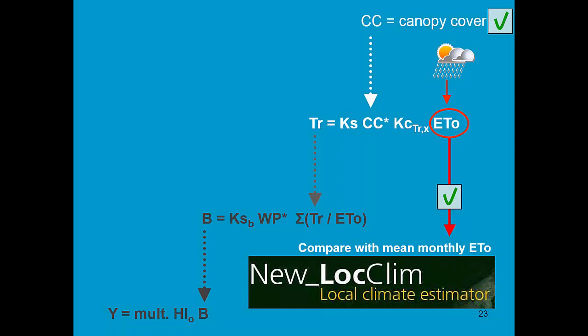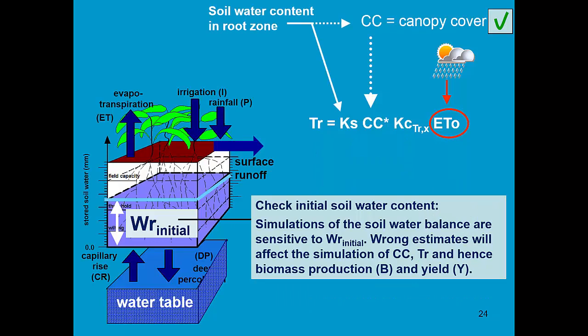So after checking ET₀, we do not need to check the proportional factor, neither the shape of the Ks curve, since these are conservative crop parameters. However, we need to check the soil water balance — first to resolve any mismatch in canopy cover, and secondly to check the calculation of crop transpiration.